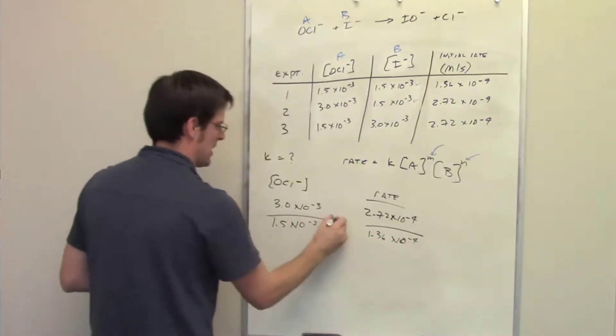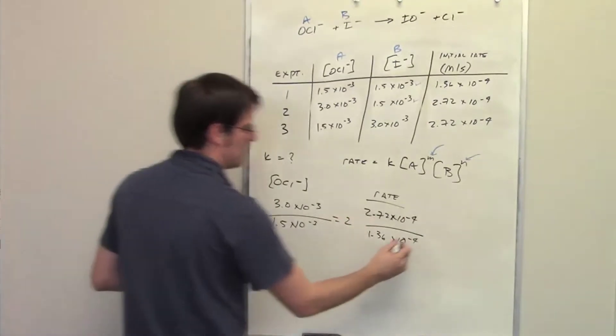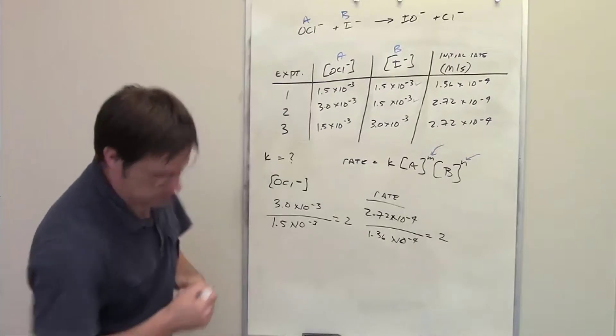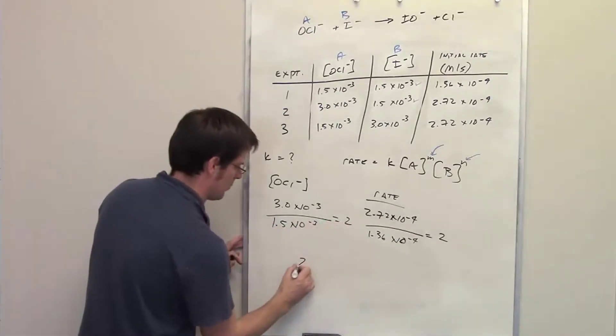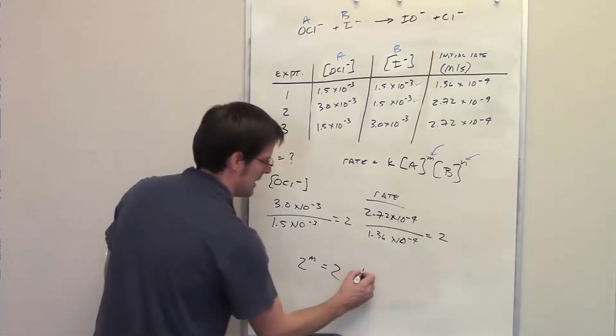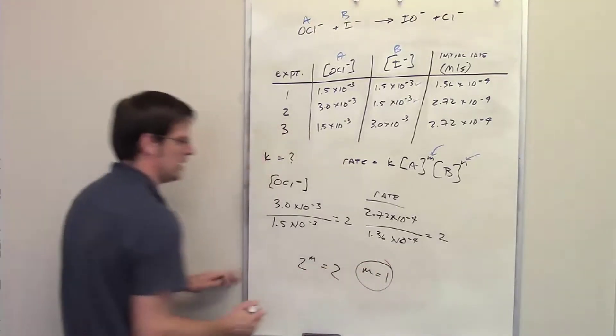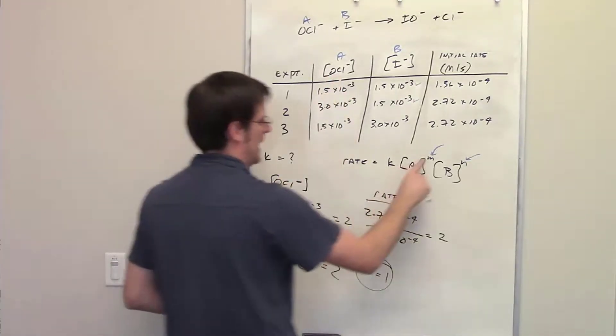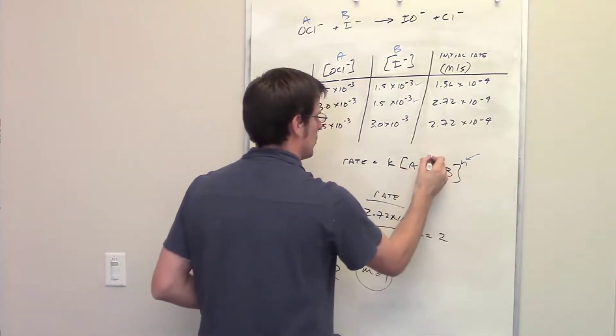I take this divided by that, I get 2. I take that number divided by that, I also get 2. So all I do is take this number and raise it to the m and set it equal to that number. What does m come out to be? m of course comes out to be 1. So 1 is the reaction rate order with respect to component A, which is the hypochlorite anion. I can now replace my m with 1.